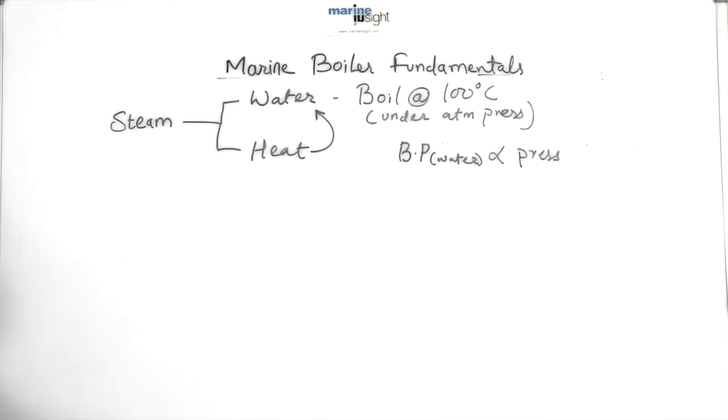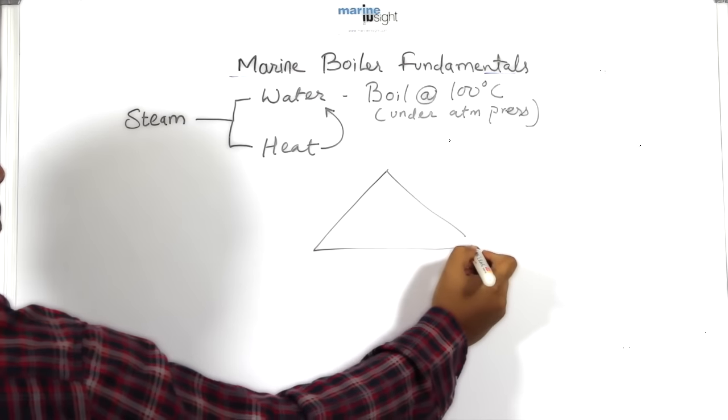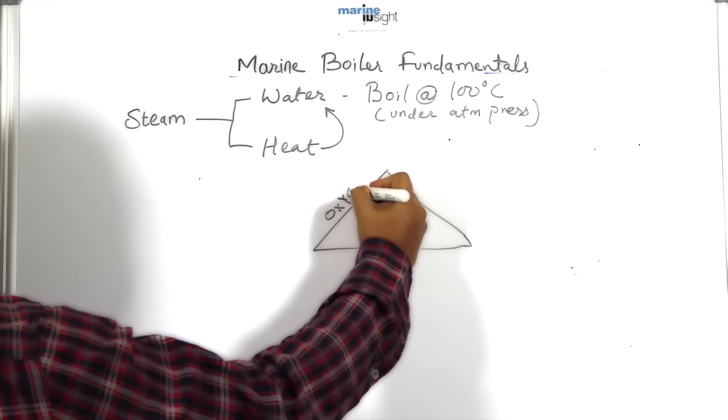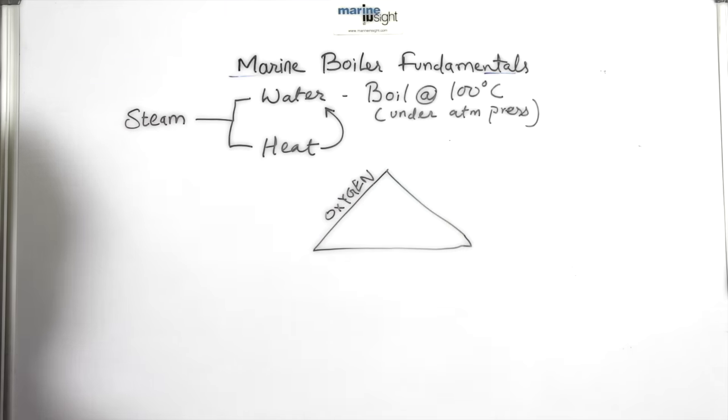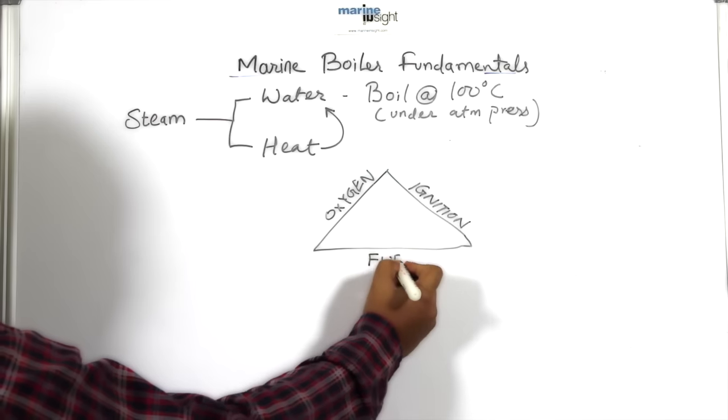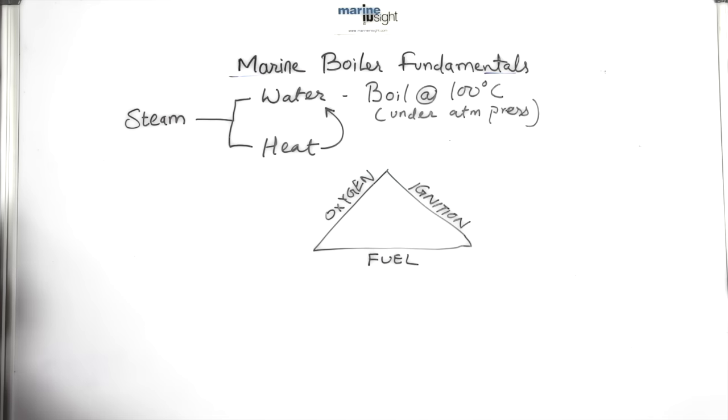To produce heat through fire inside the boiler, the three sides of a fire triangle must be satisfied. A fire triangle consists of oxygen, ignition source, and fuel. One more important factor involved in the fire triangle is the chemical reaction.